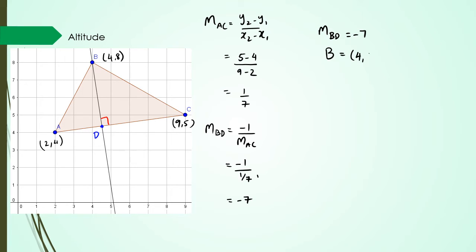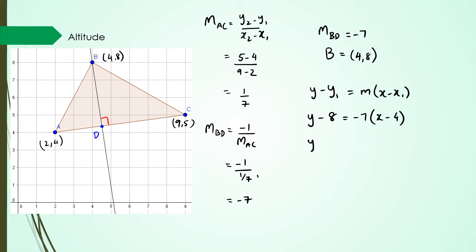I already have point B which is (4, 8), so I can work out the equation of the altitude. Using y − y₁ = m(x − x₁): y − 8 = −7(x − 4), which gives y − 8 = −7x + 28, and rearranging: y = −7x + 36. This is the equation of the altitude for this question.